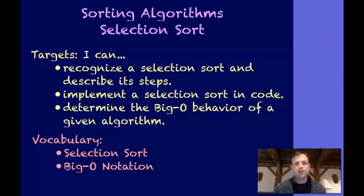Today we're going to talk about the selection sort. Specifically, we're going to look at how it is implemented, the steps that it takes as we go through that algorithm, and we're going to look specifically at the big O behavior and how to determine that big O behavior of this particular algorithm and algorithms generally.